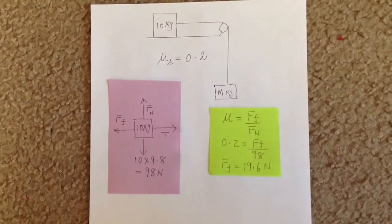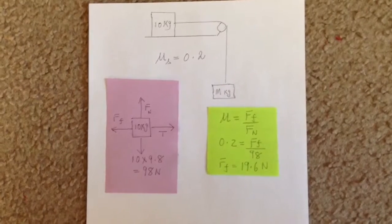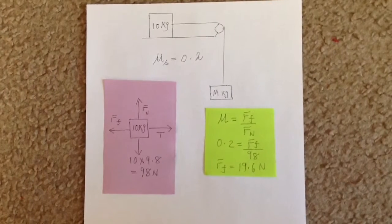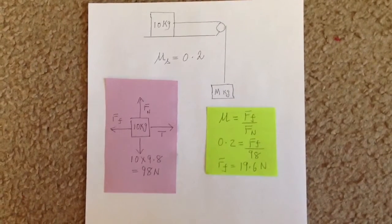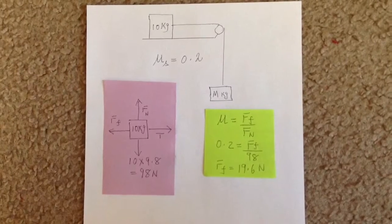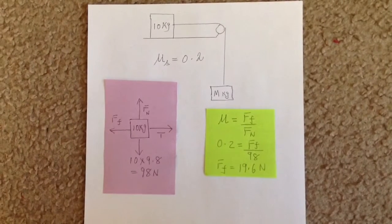Since the system is in equilibrium, the tension must equal the force of friction. Therefore, the tension in the rope is 19.6 newtons.